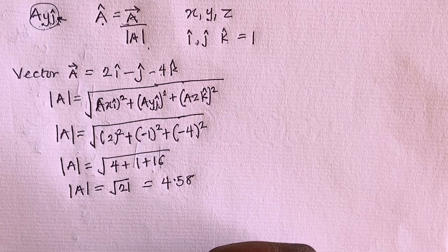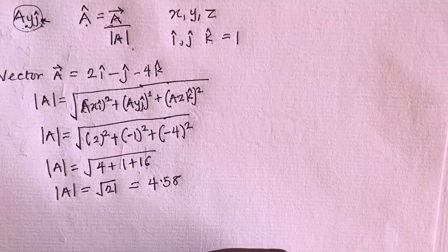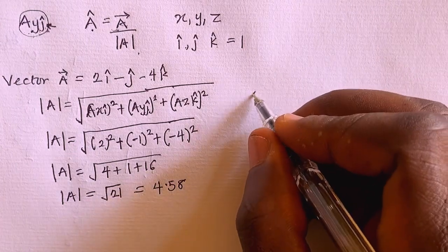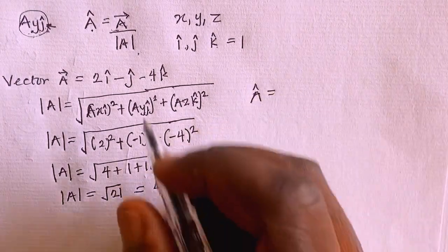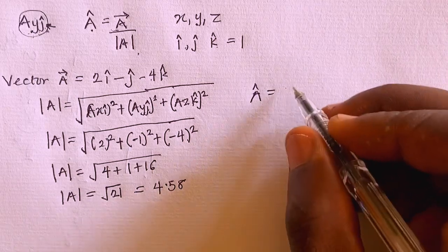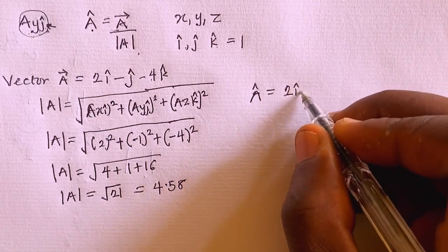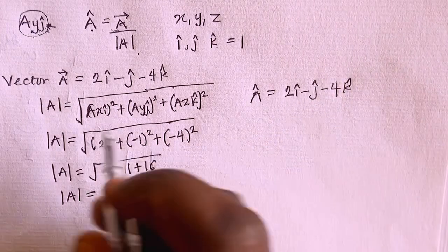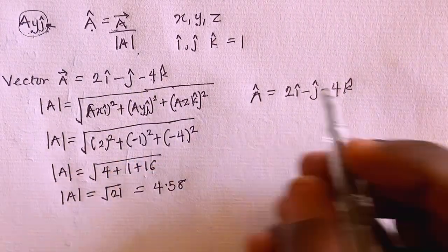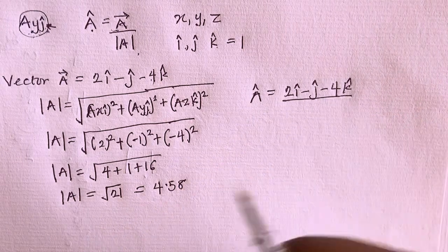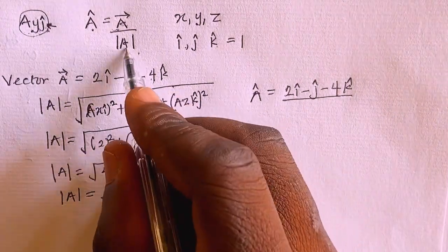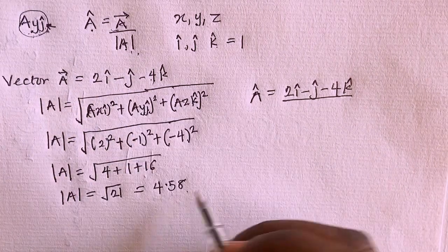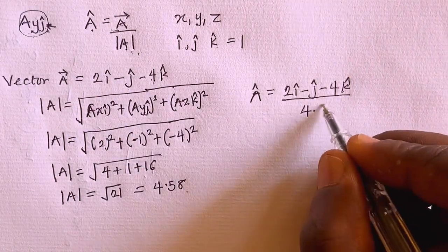After that, what we need is to go ahead and calculate the unit vector. To calculate the unit vector, we have it equal to our vector a, which is 2i minus j minus 4k, divided by the magnitude of vector a. In this case, the magnitude of vector a is taken to be 4.58.